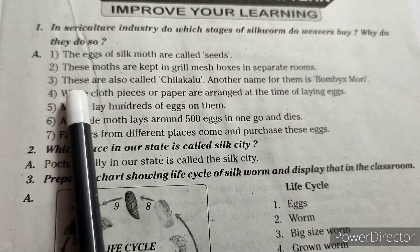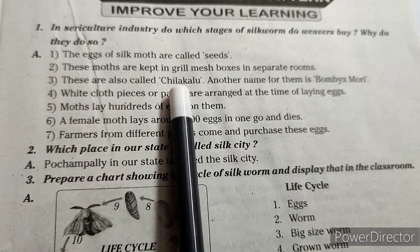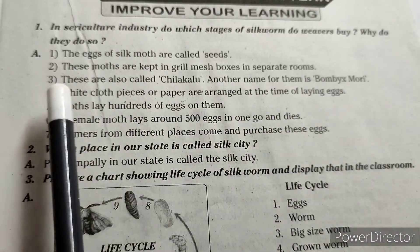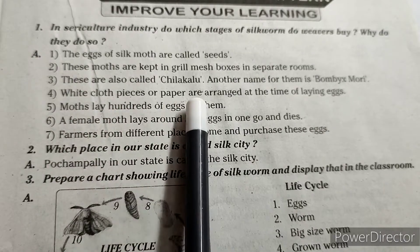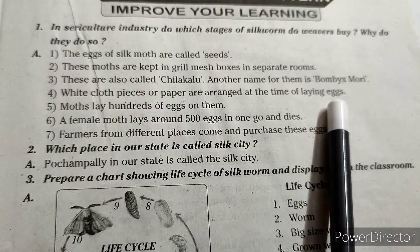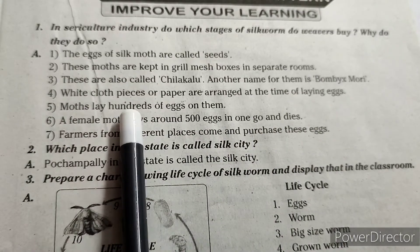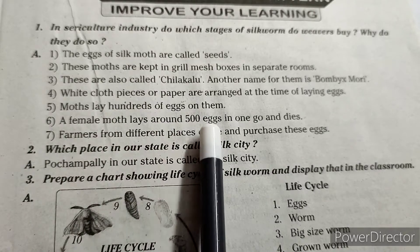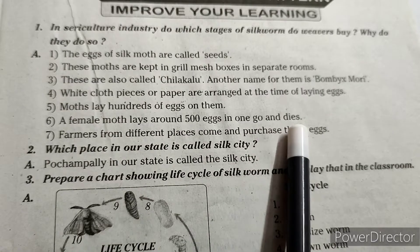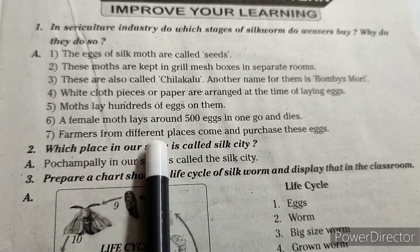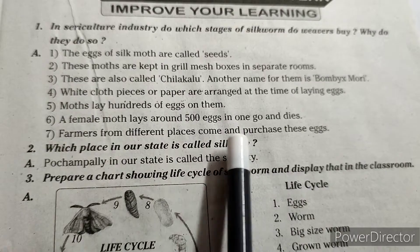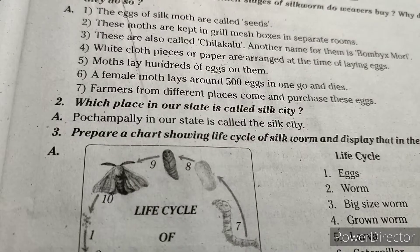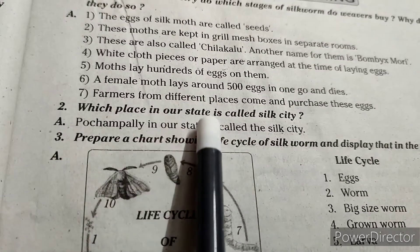These eggs are also called chilakaloo, another name being Bombyx mori. White cloth pieces or paper are arranged at the time of laying eggs. Moths lay hundreds of eggs on them — a female moth lays around 500 eggs in one go, and then dies. Farmers from different places come and purchase these eggs.